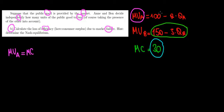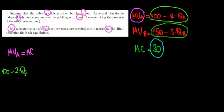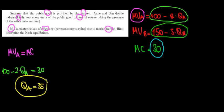The marginal utility of N is 100 minus 2 times the quantity she provides. So we have 100 minus 2Q_N equals 30. Solving: 100 minus 30 is 70, so 70 equals 2 times the quantity, meaning N would provide 35 units.